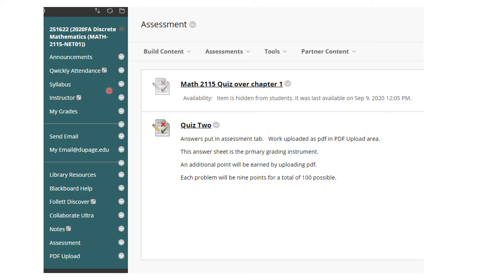So again, reminding you, your quiz is going to be the hard copy with the questions in the syllabus tab. You're going to do the work on that. When you are ready to submit your answers, you're going to go into the assessment tab, and you'll be opening Quiz 2, and here is where you're putting your answers. This will be the primary grading instrument, and this is where you will upload a PDF of your work. Again, this is how we're going to do the midterm and final, so you want to get used to it.